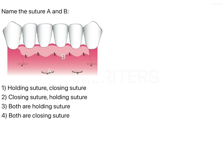When you are doing coronally advanced flaps or a mucoperiosteal flap, you are raising the mucosa as well as the periosteum so that you can gain direct access to the bone. What happens is the mucosa as well as the periosteum is being stripped away from the bone.